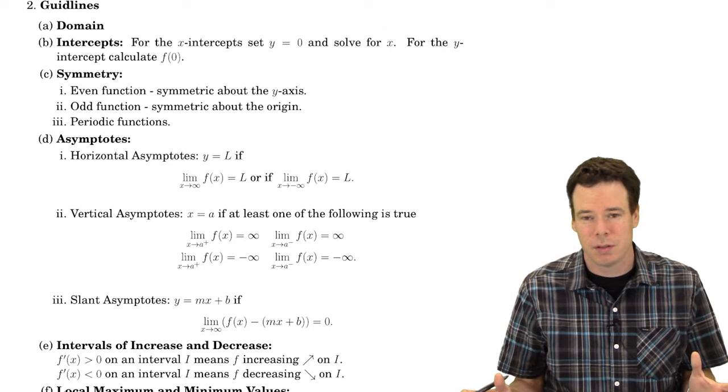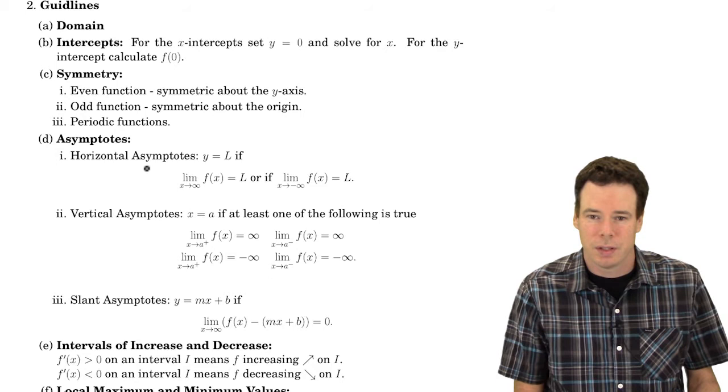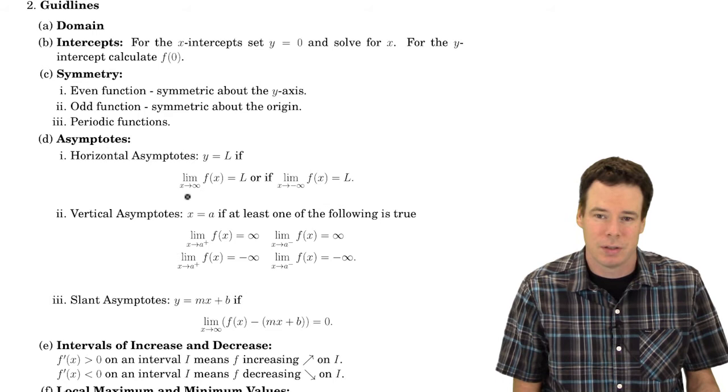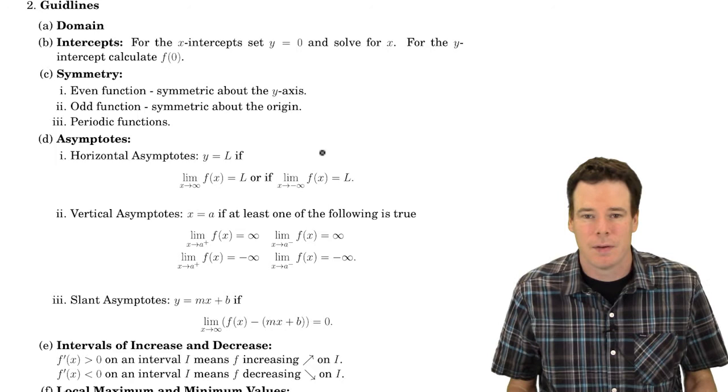We can go ahead and find some asymptotes. We'll look at the horizontal asymptotes. Now this is the end behavior of the function, so we're going to look at the limit as x goes to infinity or negative infinity and see what's going on at the ends. And if the function tends towards a particular number, then we know that we have a horizontal asymptote.